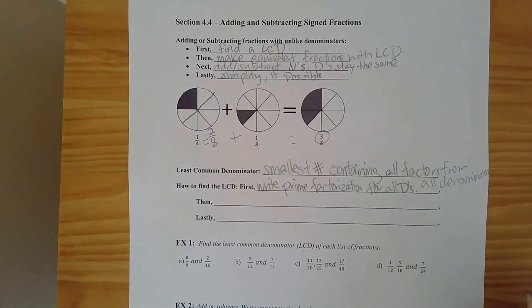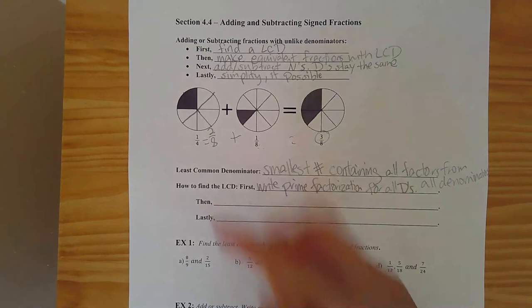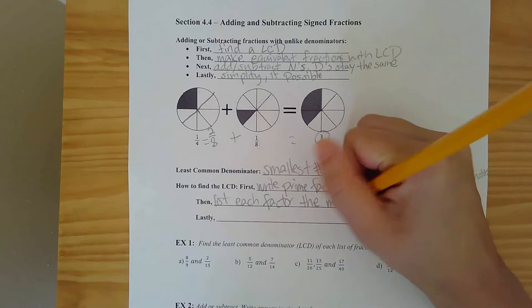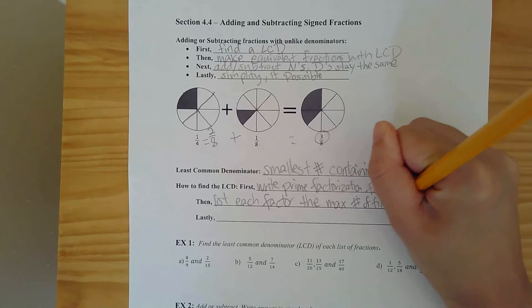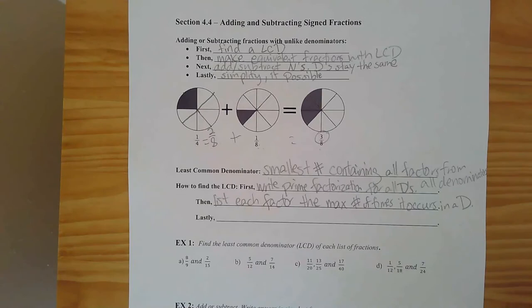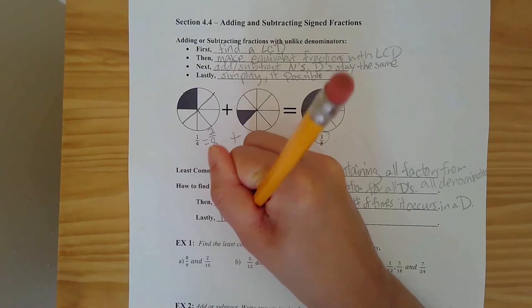Next, make a list of those factors. List each factor the maximum number of times that it occurs in a single denominator. So if one denominator has two threes and another only has one three, you list it twice because that's the most that anybody has. Then multiply that list together and that gives you your LCD.